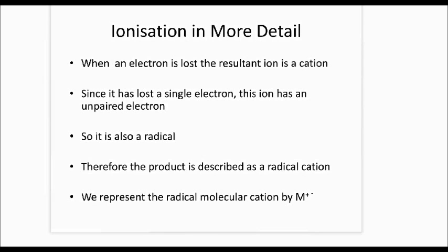We represent the radical cation as M-plus-dot. The M means molecule, the positive charge means it's lost an electron and is positively charged, and the dot means it's a radical.